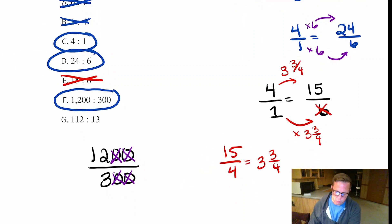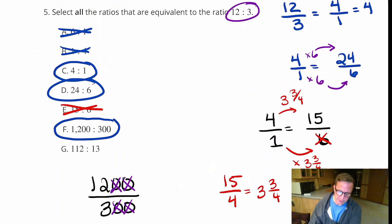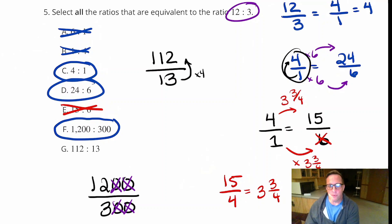And then 112 to 13. Now back to the 4 to 1 ratio. 1 times 4 is 4. Now does 13 times 4 equal 112? No, not according to my math. 13 times 4 is 52. So that one you can count out. That's not it.